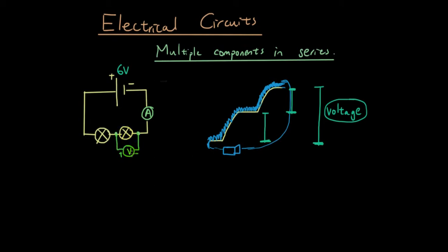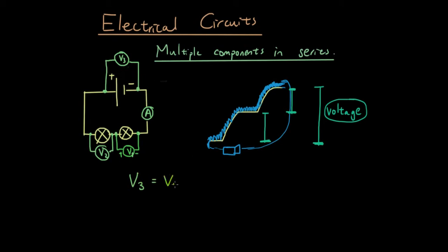Let's call this V1. And let's connect another voltmeter here to measure the voltage across the second light bulb, and let's call this V2. And let's put another voltmeter around the battery and call it V3. The equation that relates V1, V2, and V3 is that V3 equals V1 plus V2. The voltage of each component added together is equal to the voltage supplied by the battery.